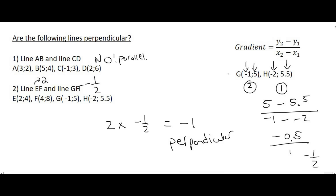This means the lines cross each other at exactly 90 degrees. Some lines cross each other but don't make a 90-degree angle. If they do make a 90-degree angle we call them perpendicular, and that happens when you multiply the two gradients together and get minus 1.